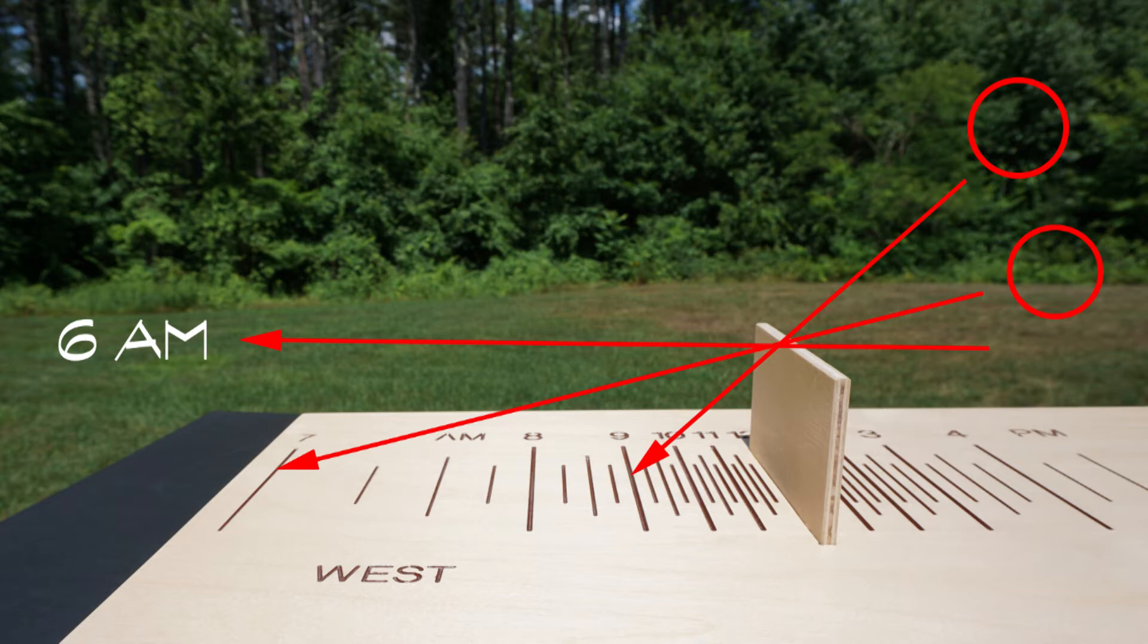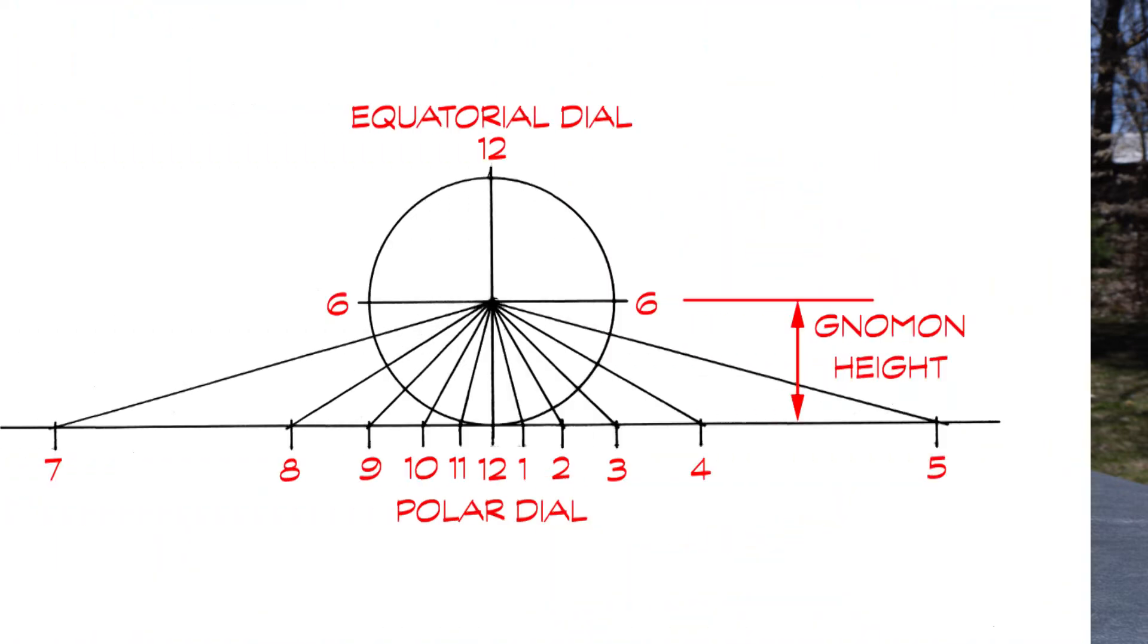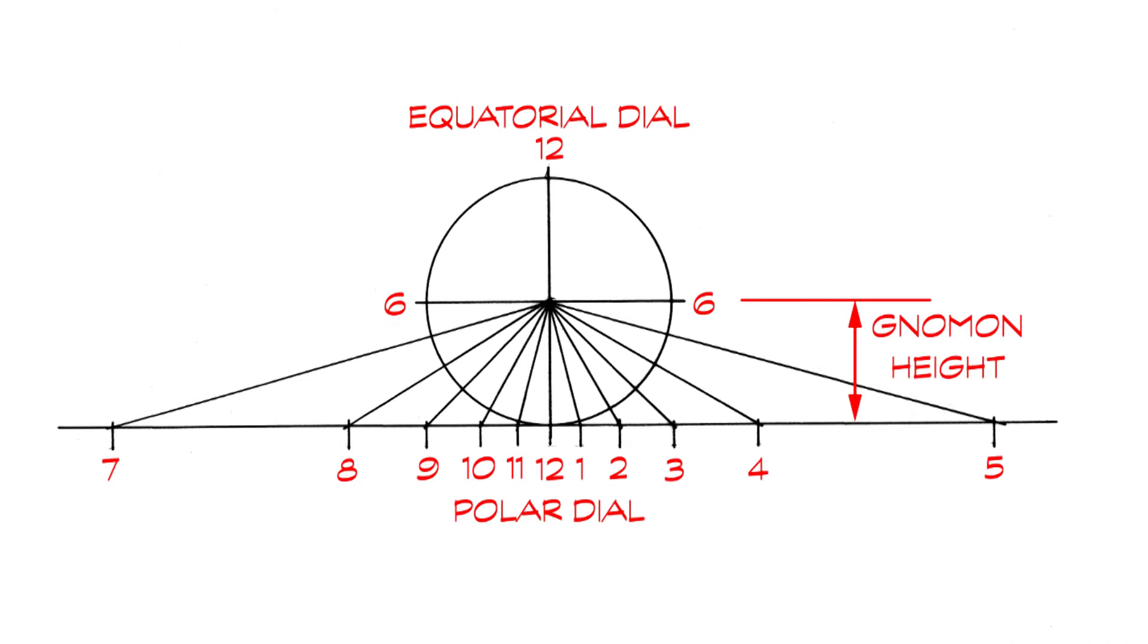We can use an equatorial dial to help understand how the design of these two dials are linked. It could be said that all dials are derived from the equatorial. This diagram shows an equatorial dial touching the horizontal plane of what will become a polar dial. The center of the equatorial, its gnomon, equals the height of the gnomon for the polar dial. The 15 degree hour segments of the equatorial are then extended until they contact the horizontal surface to become its hour lines.